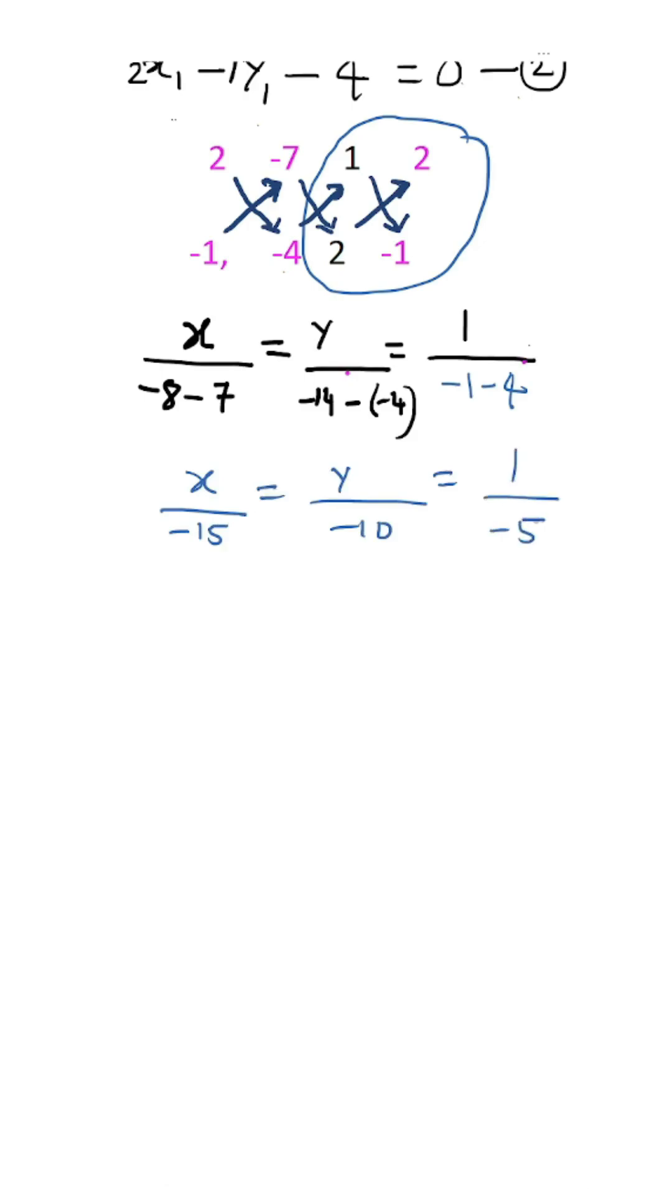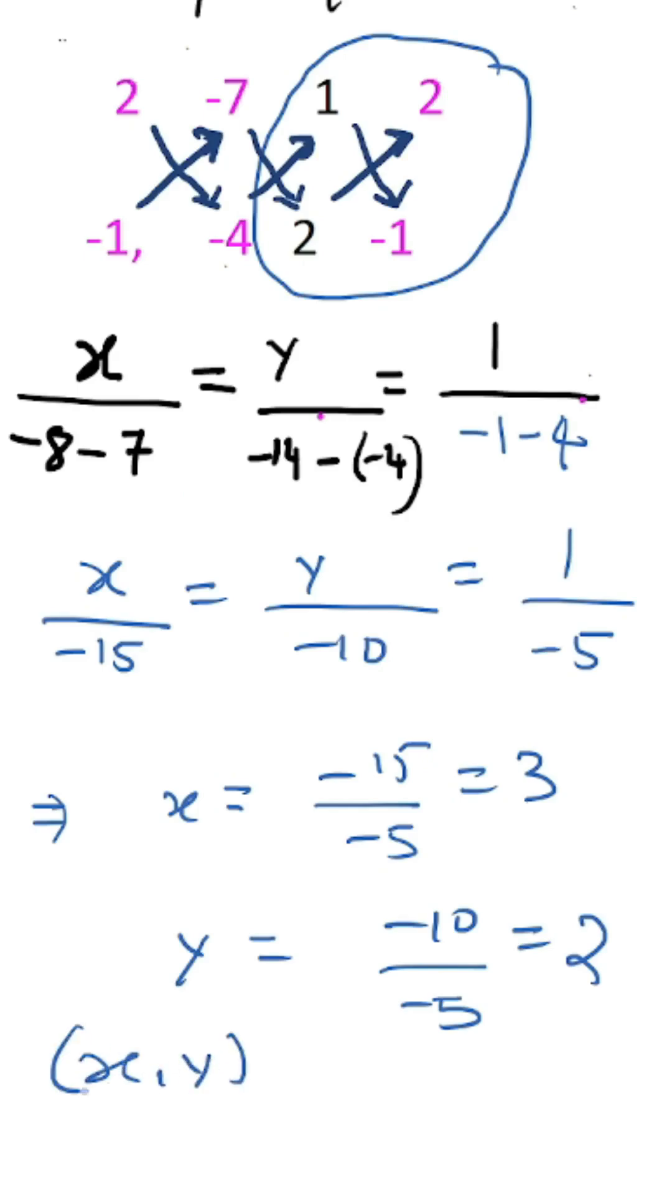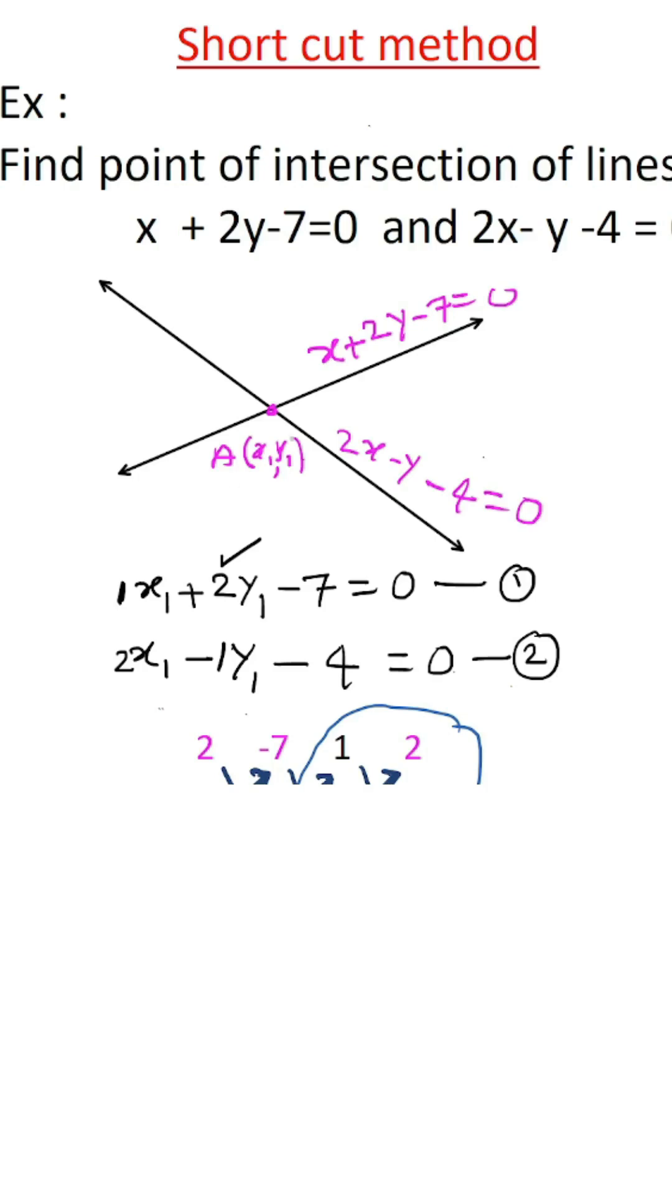Therefore the solution set X, Y equals 3, 2. Therefore the point of intersection of the two lines is A(3, 2).